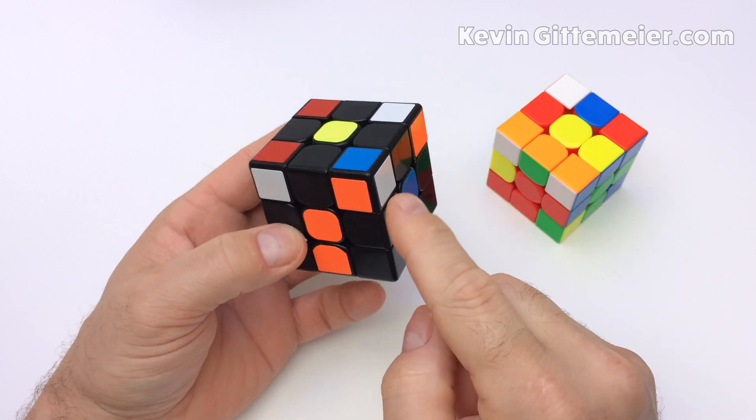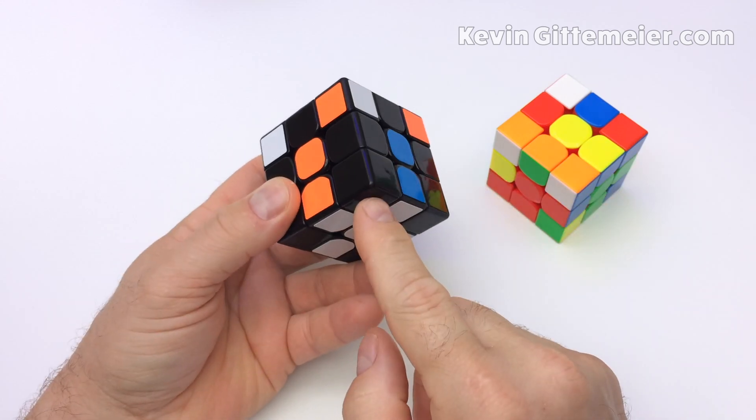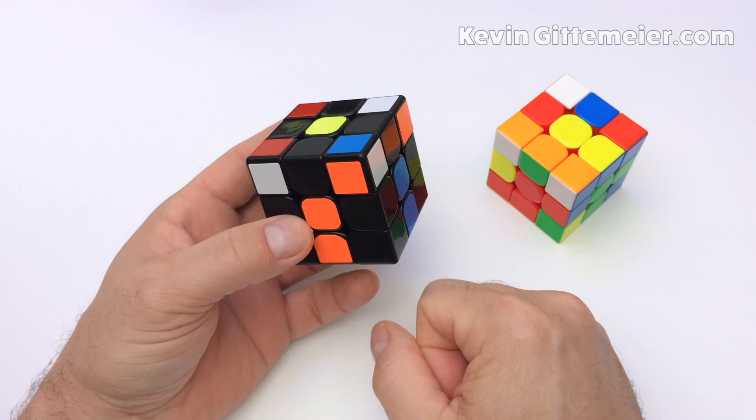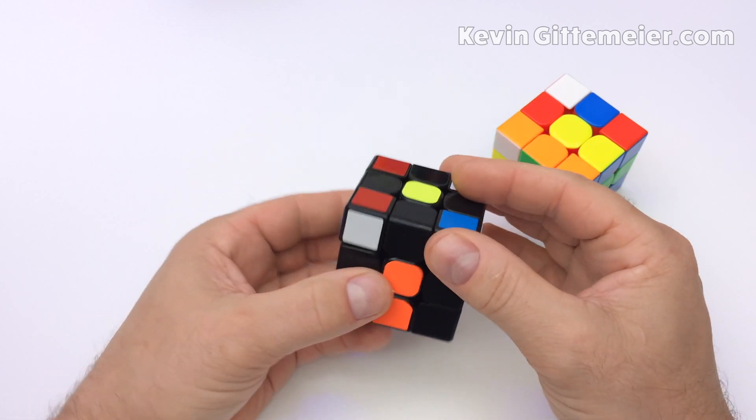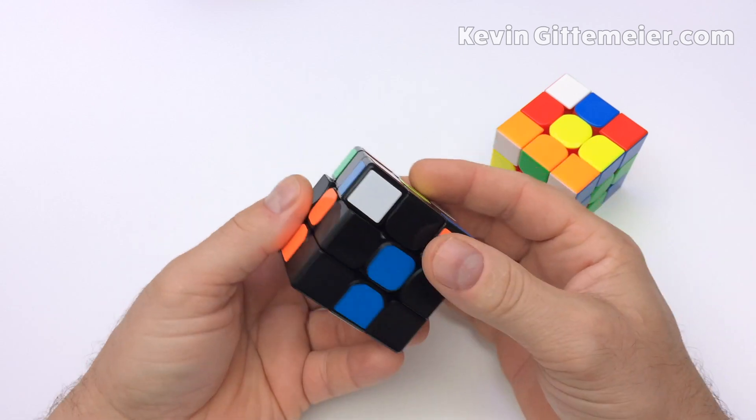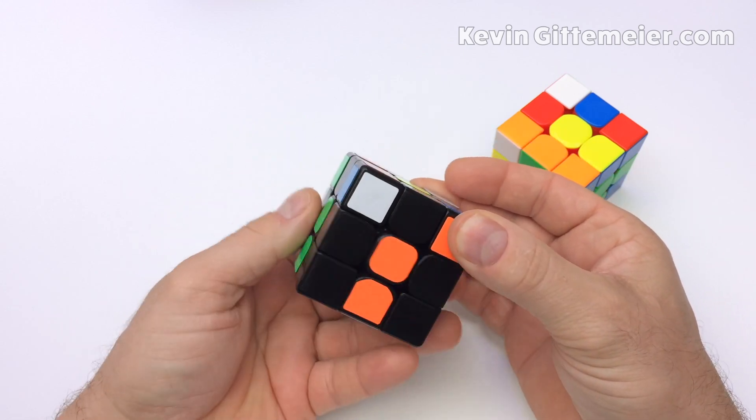This is orange blue so it goes above the corner between orange and blue. A quick shortcut to do this is notice the side color and then just match it up with its center color. Wrong, wrong, correct.